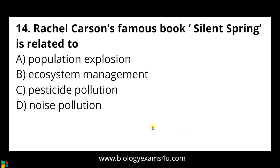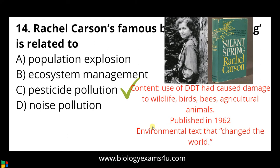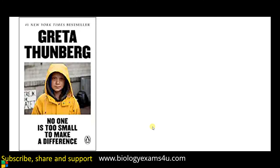Question number fourteen: Rachel Carson's famous book 'Silent Spring' is related to — a) population explosion, b) ecosystem management, c) pesticide pollution, d) noise pollution. The book was about DDT and associated pesticide pollution — a massive description of the wide use of DDT and how it affects the entire ecosystem. It was published in 1962 and changed the world, inspiring many environmental revolutions. A recent addition is Greta Thunberg's 'No One Is Too Small to Make a Difference.'